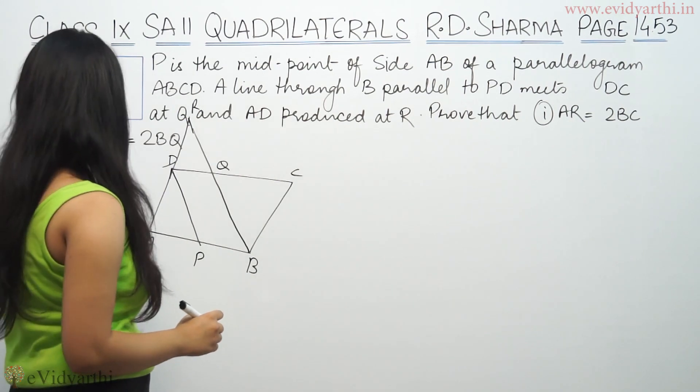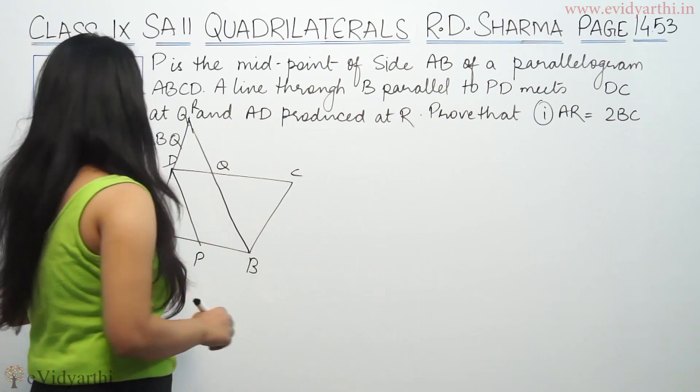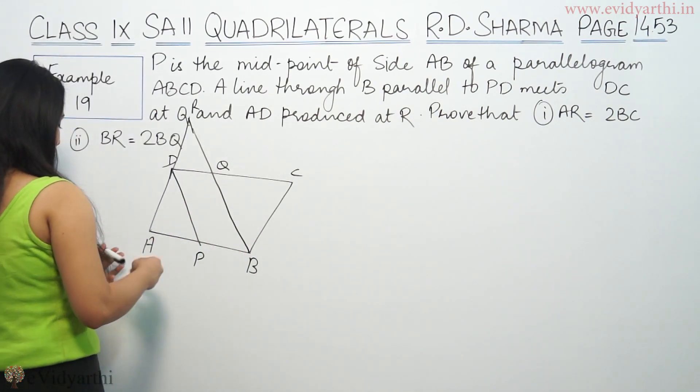Prove that AR is twice BC and BR is twice BQ. So first of all, this is the triangle.